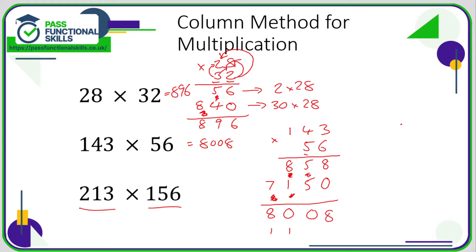Let's look at the final example — two triple-digit numbers. It doesn't matter which goes on top since they both have three digits. I'll put 213 on top and 156 underneath. We'll repeat the same process: 6 times 3, 6 times 1, 6 times 2 on the top line. On the second line we put in one zero because this is the 5 of 50, then do 5 times 3, 5 times 1, and 5 times 2. On the third row we put in two zeros because this is the 1 of 100.